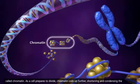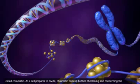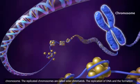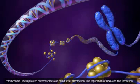As a cell prepares to divide, chromatin coils up further, shortening and condensing the chromosome. The replicated chromosomes are called sister chromatids.